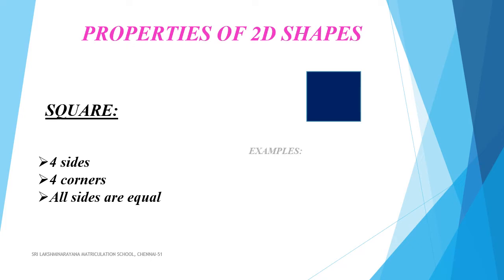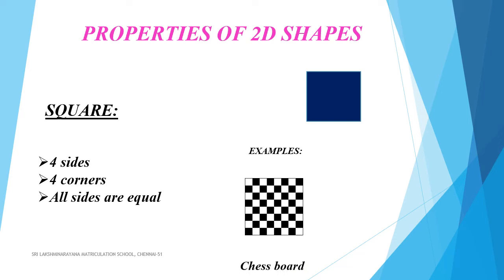Now, let us list out the things around us that are square in shape. Some examples: chess board and carom board.